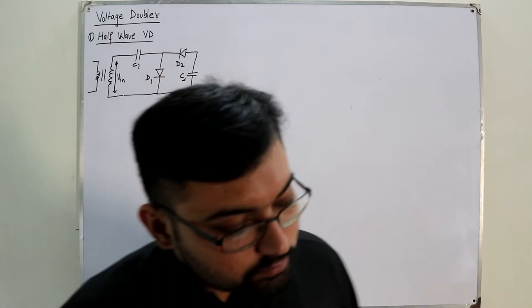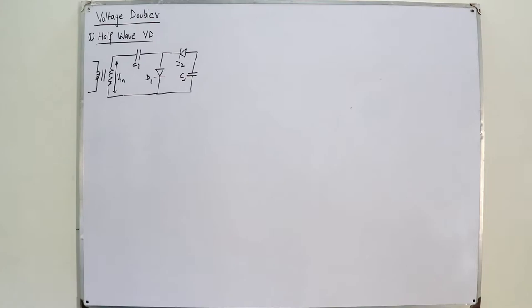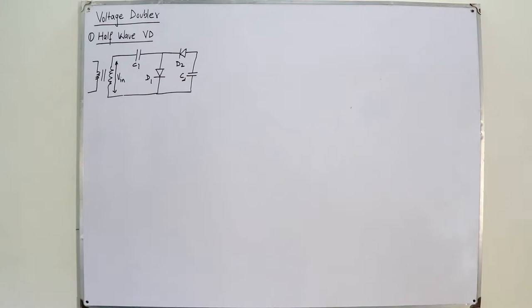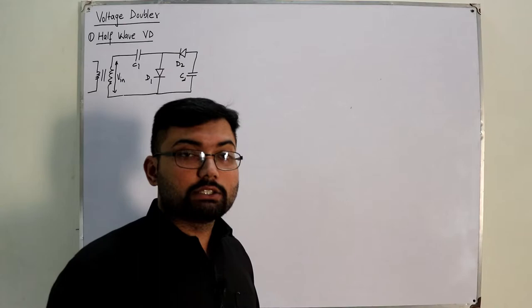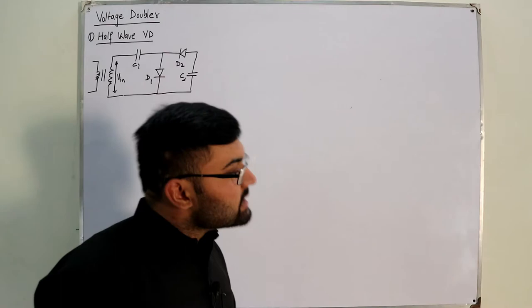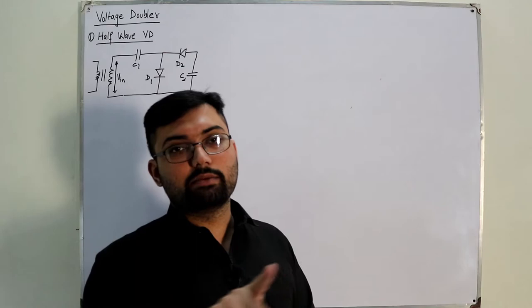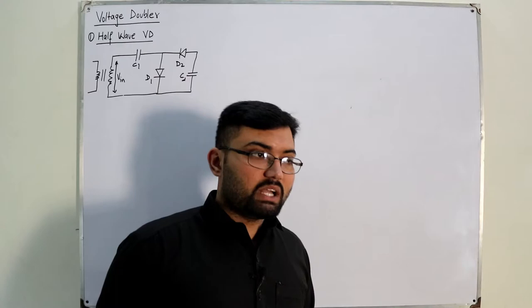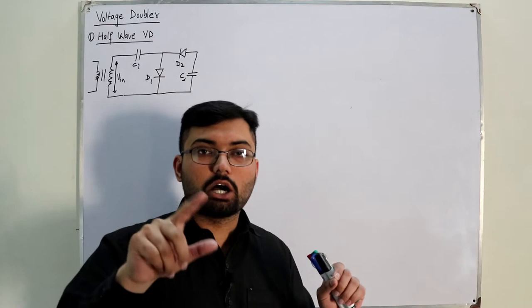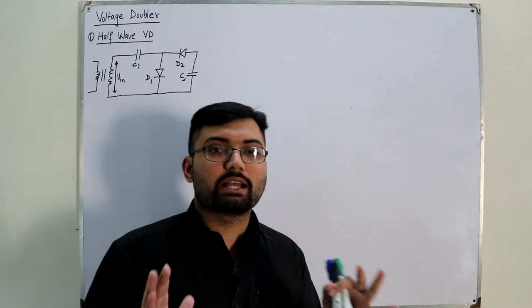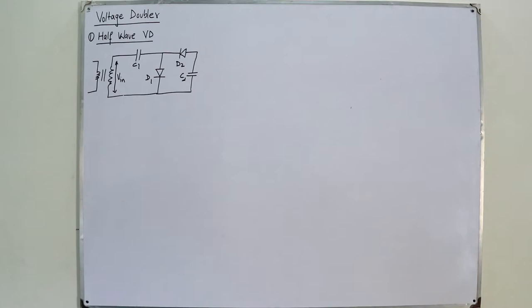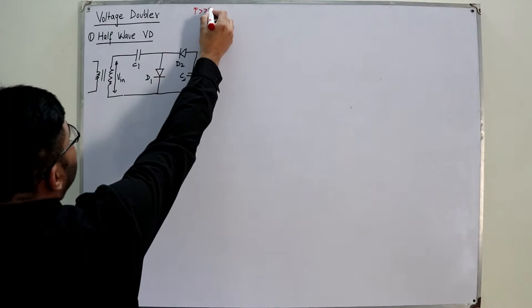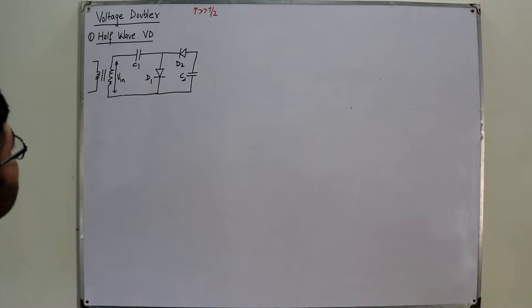Whatever the transformer is doing — stepping up or stepping down — we are not interested in that. We will talk about the sinusoidal input. You know the conditions for a diode to be forward or reverse biased, and you know the charging and discharging of capacitors from previous videos. I will only consider the maximum value directly because the capacitor charges to the maximum value. The time constant of discharging, tau, is far greater than T/2, so the capacitor will not discharge during the negative cycle when the corresponding diode is off.